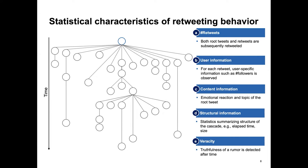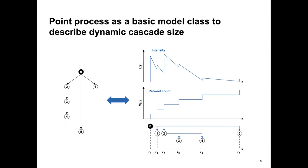This cascade tree can be translated into a point process. We see a simplified cascade on the left, and we can translate it into a point process with an intensity function lambda of t and a counting measure N of t, which essentially counts the number of retweets over time. Both N of t and lambda of t can be derived from the simple tree by considering the timing of events. This is the first step: translating retweet cascades into point processes.